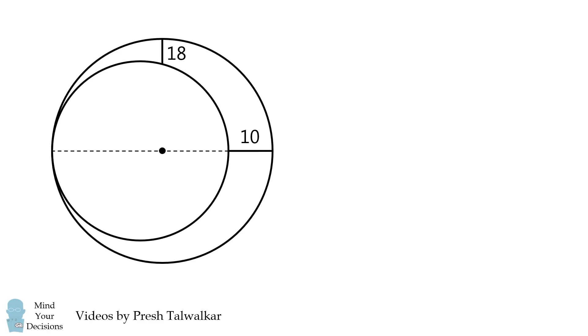Now draw another diameter of the large circle that's perpendicular, and at these points the distance between the two circles is 18. The question is what is the area in between the two circles?